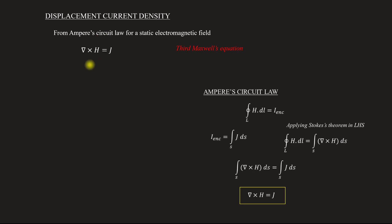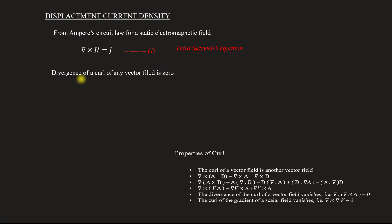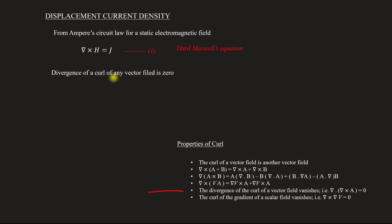This expression was already derived in the previous lectures, so this expression is our outcome. Let it be equation number 1. This states that the divergence of a curl of any vector field is zero — what we call the divergence property. That is, del dot del cross A is equal to zero.